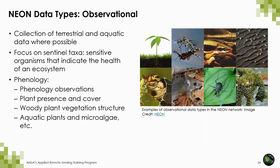Where logistically possible, NEON collects data at aquatic and terrestrial sites together. Sampling focuses on sentinel taxa — sensitive organisms that indicate the health of the ecosystem and provide data relevant to public health. Changes in community dynamics of sentinel taxa affect ecological processes such as disease transmission rates, agricultural pest control, and ecosystem structure and function. There are many different observations collected, and I do encourage you to visit the NEON website if you're interested in specific types of data.